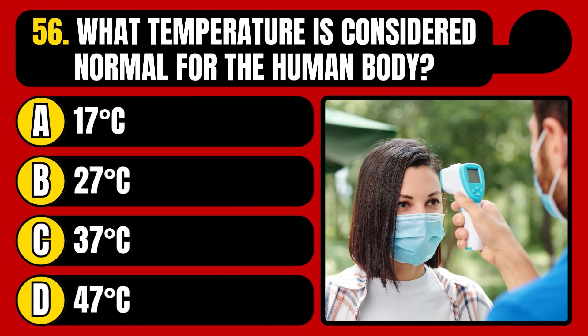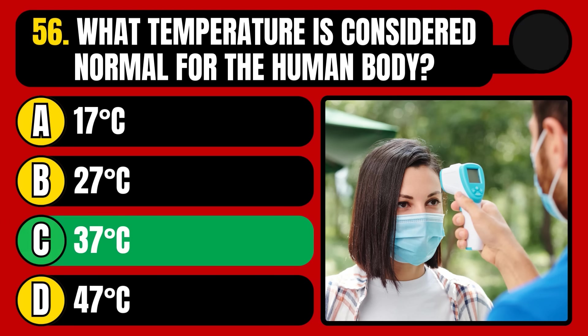What temperature is considered normal for the human body? 17 degrees Celsius, 27 degrees Celsius, 37 degrees Celsius, or 47 degrees Celsius? The correct answer is option C, 37 degrees Celsius.